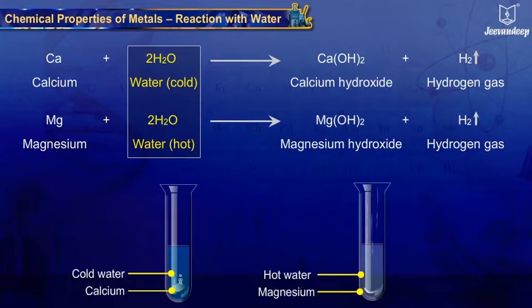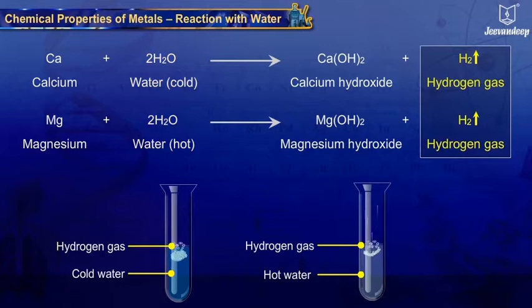Calcium and magnesium both start floating when reacted with water as bubbles of hydrogen gas stick to the metal surface. Not enough heat is evolved to induce burning of the released hydrogen gas.